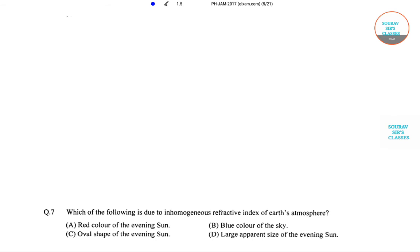Now the next question is from the same year 2017. This is question number 7 from section A. Question says: Which of the following is due to inhomogeneous refractive index of Earth's atmosphere?